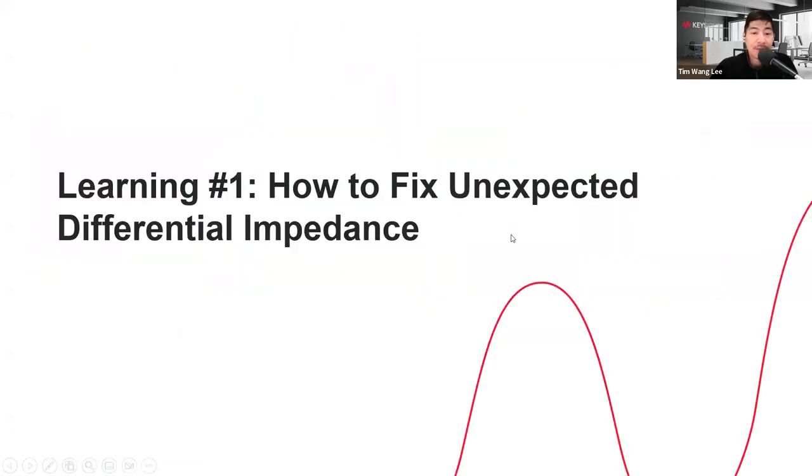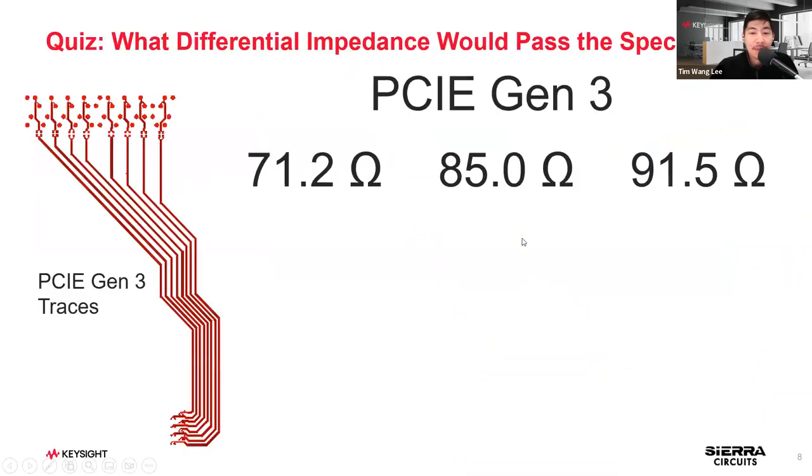First, how do you fix an unexpected differential impedance? Before we go there, I want you to think about PCIe Gen 3 if you have experience designing it. There are three choices: which impedance would pass the spec? Is it 71.2, 85, or 91.5?